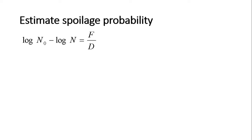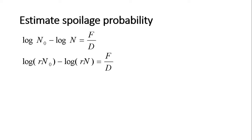I will show you how to determine spoilage probability of a processed product. In the first equation, N-note indicates the initial spoilage microbial population, whereas N indicates the desired final microbial population for a thermal death rate time of F. In the second equation, R has been added, where R indicates the number of containers exposed to the food process. So the total microbial load at the beginning of the process is R times N-note.